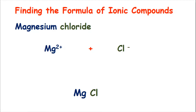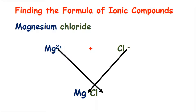We draw one arrow from the 2+ down next to the Cl, and then we draw a second arrow from the minus of Cl- down to the Mg. Now there is no number next to the Cl, so we're not going to put any number down next to the Mg either. However, there's a 2 in Mg2+ which moves down next to Cl, and the formula for magnesium chloride is MgCl2.